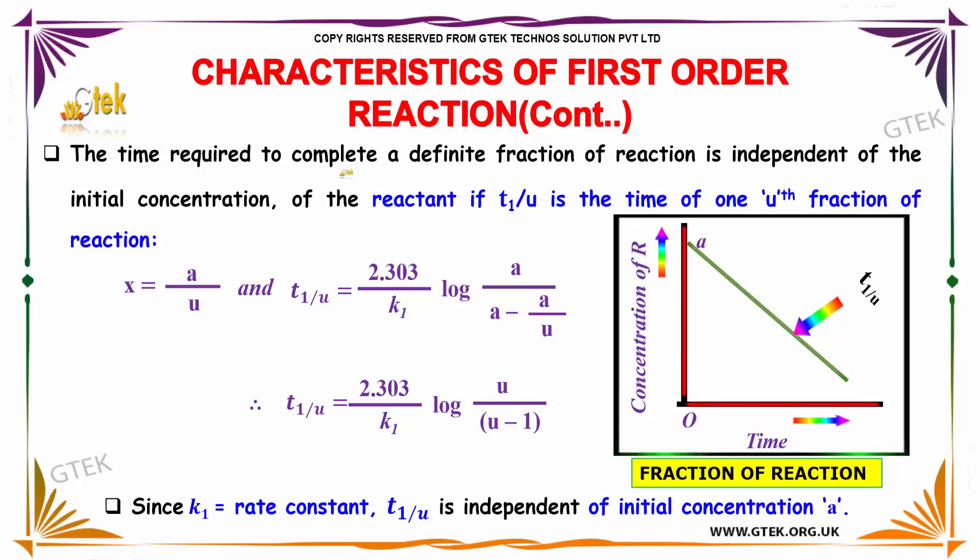The time required to complete a definite fraction of reaction is independent of the initial concentration of the reactants. If t1/u is the time of one u-th fraction of reaction, so x equals a/u, then t1/u is given by 2.303 divided by K1, log of a divided by (a minus a/u).